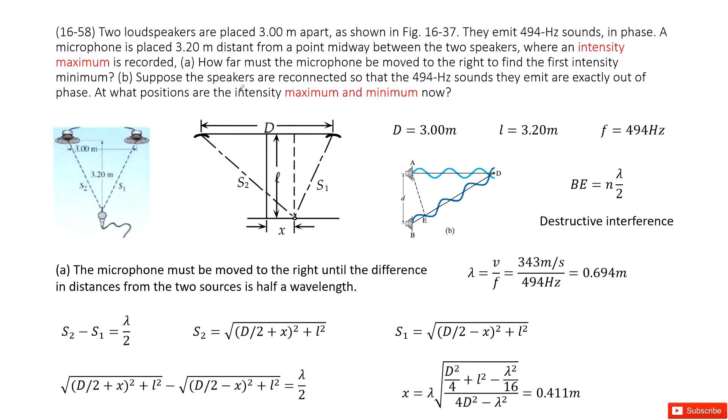This problem is about interference. You can see we have two speakers and the distance d is given there, and then there is a source at there so the l is given. And also the frequency for this sound wave is also given.